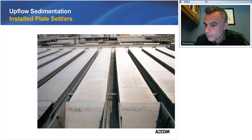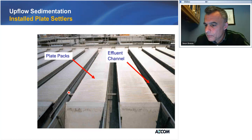Here's an example of installed lamella plates. These plates come in package sections that get bolted together and assembled into the basin. You can see a V-notch weir along the top — water comes up between the plates and over the V-notch weir. The V-notch weir is the mechanism used to balance the load through the lamella plates. The clarified water is then collected in a launder and sent off to filtration.